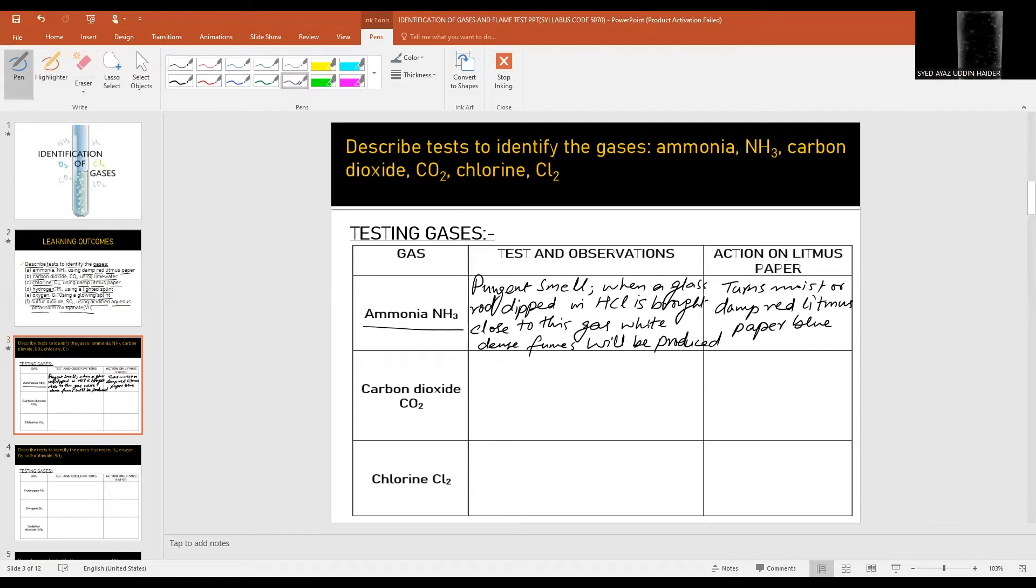Carbon dioxide: when bubbled through lime water, turns solution milky. Extinguishes burning splint or matchstick. That's why it's used in fire extinguisher. It's an acidic gas which means it turns moist damp blue litmus paper to red.